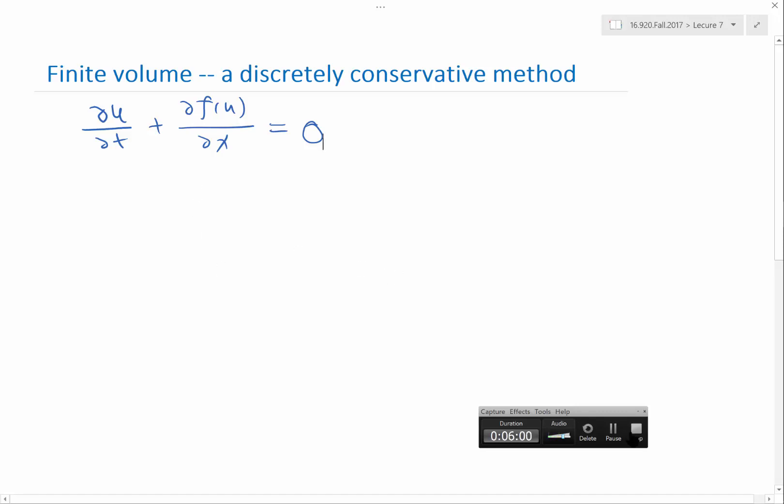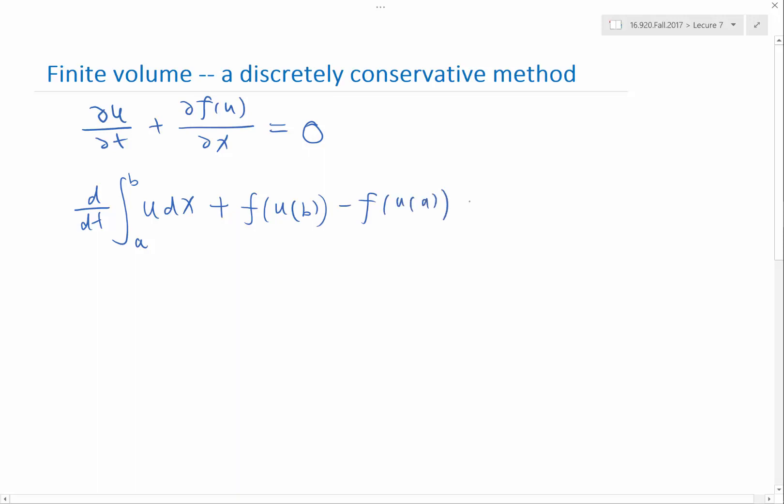We have this equation, but we don't want to discretize it because df/dx may not even exist around the discontinuity. So instead we discretize the integral form: integration over any interval a and b of u dx plus f(u(b)) minus f(u(a)) is going to be equal to zero. This is the equation I want to discretize, and this equation is true for any a and b.